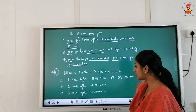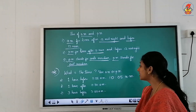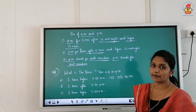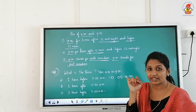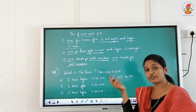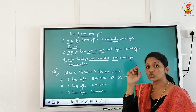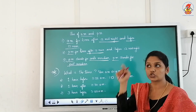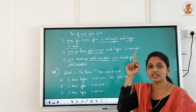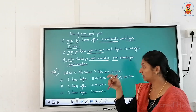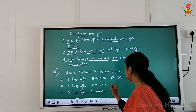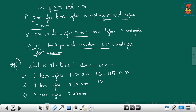One hour after eleven thirty AM: eleven thirty AM, after one hour is twelve thirty. Twelve thirty means afternoon, so we say twelve thirty PM.